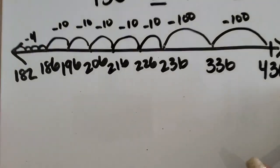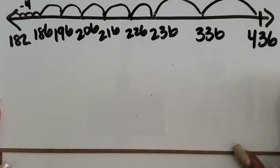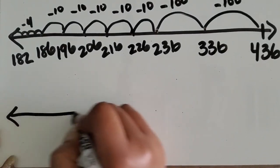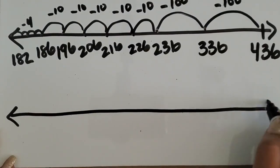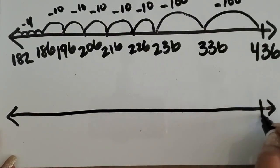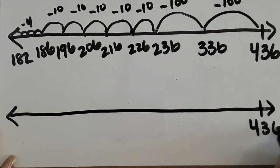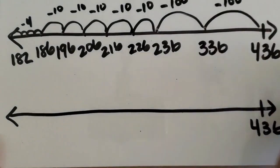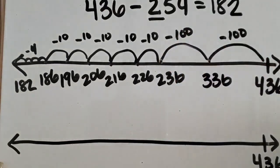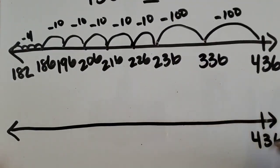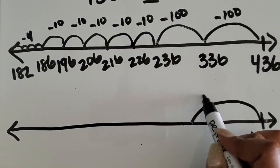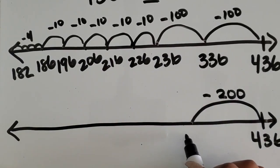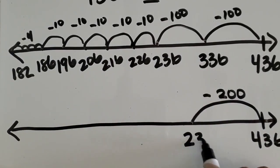Let's look at another way we can solve this. I'm counting backwards on the open number line again. I want to subtract two hundred fifty-four, so let's just go ahead and subtract two hundred. That'll give me two hundred thirty-six.